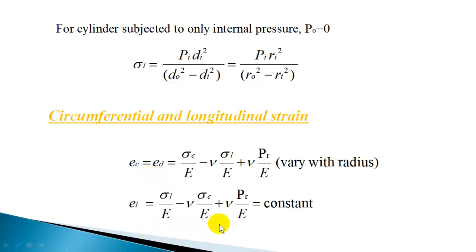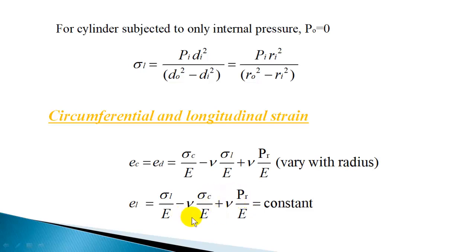Longitudinal strain is constant for a thick cylinder and is calculated as: εL = σL/E − ν·σC/E + ν·PR/E. Although circumferential stress and radial pressure both vary with radius, they give opposite effects — circumferential stress decreases longitudinal strain while radial pressure increases it. These opposing effects cancel out, so the total longitudinal strain remains constant throughout the cylinder walls.